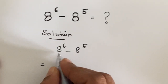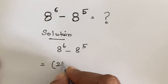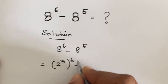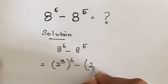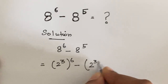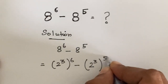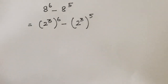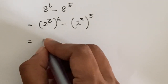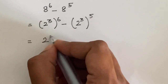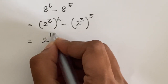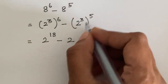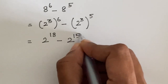8 can be written as 2 cubed, so we have 2 cubed to the power 6 minus 2 cubed to the power 5, which equals 2 to the power 18 minus 2 to the power 15.